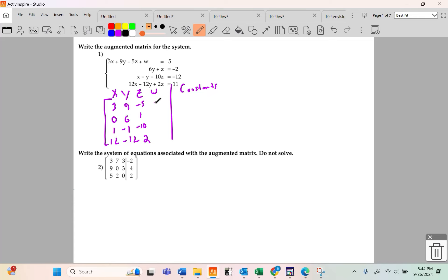And now I'm at w's. That guy has a w. Nobody else does. And then we have a 5, a negative 2, a negative 12, and an 11. There we go. Ta-da! Not too hard.